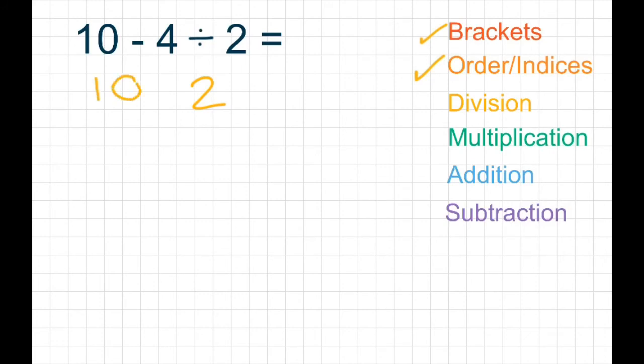We don't have any multiplication or addition. We do have subtraction and that's where we're going to finish our sum. 10 take away 2 gives us 8.